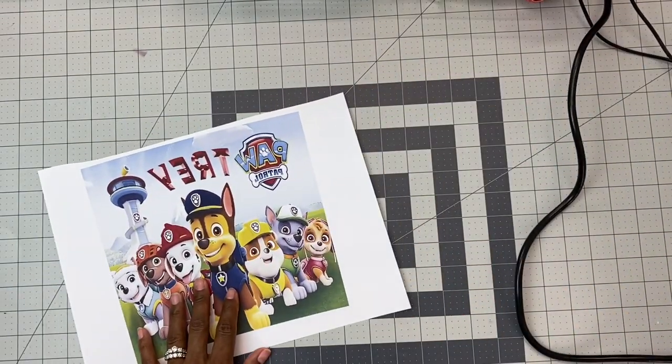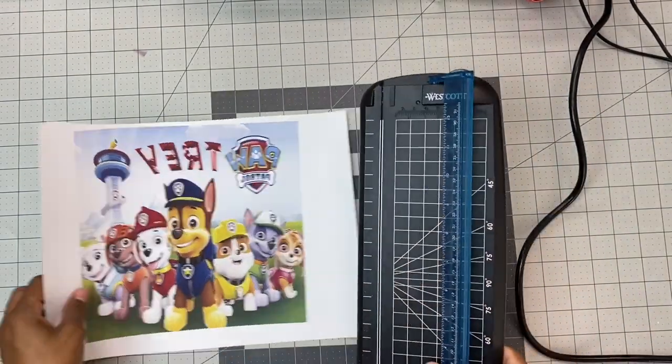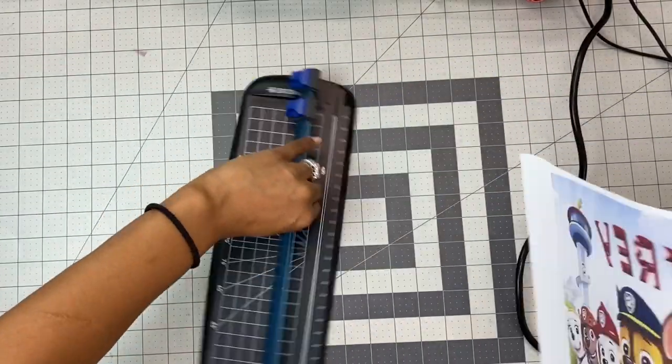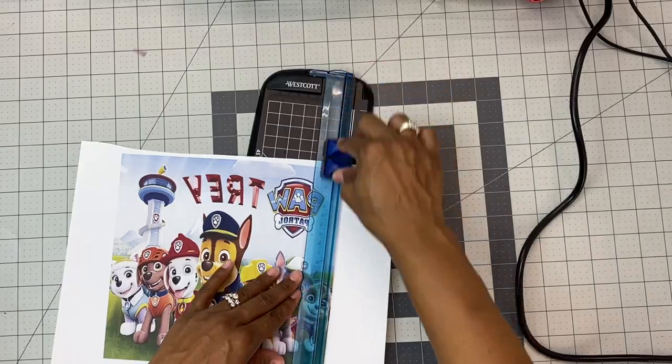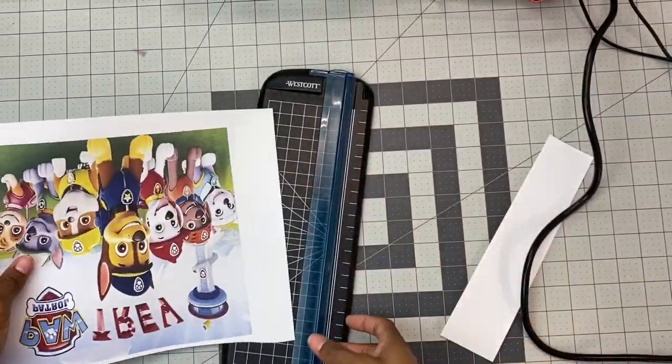You guys know I like to give you a good old two-for-one special, so I'm gonna work on another one while the first one is sublimating. Again, I put my tumblers in the oven for six minutes at 400 degrees, and I rotate them halfway through, about a 180-degree rotation.